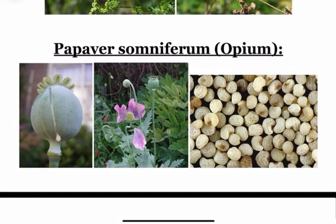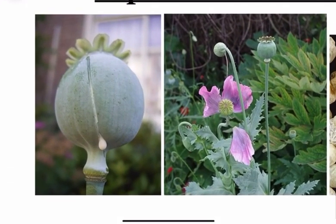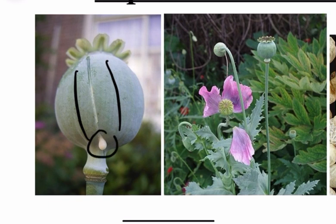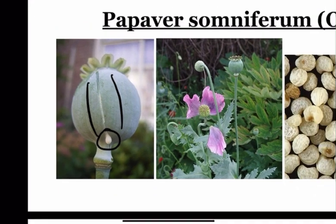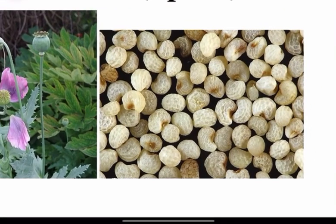Next is Papaver somniferum or Opium. It is made from the unripe capsule on which slits are made and then the white milky exudate pops out, like in this case. The crude opium contains all the alkaloids and then it is purified. We also have poppy seeds but these are not toxic.